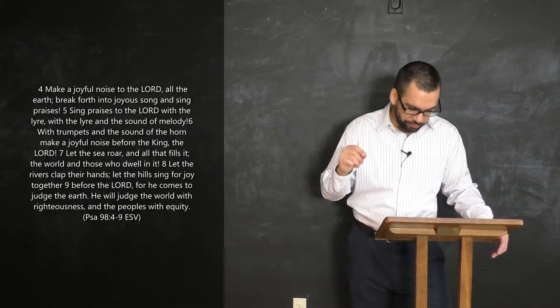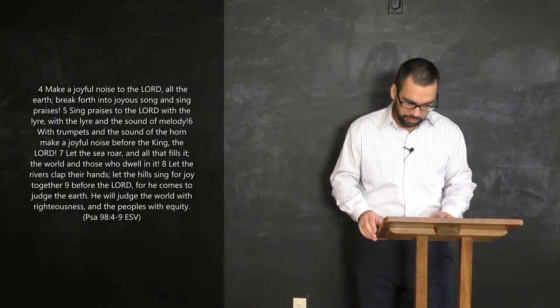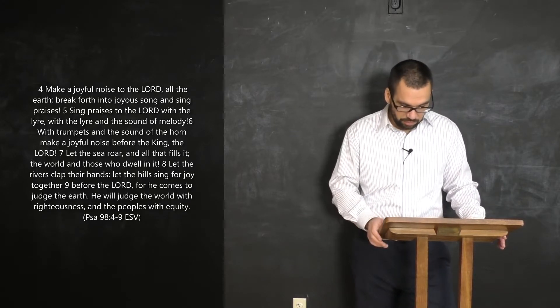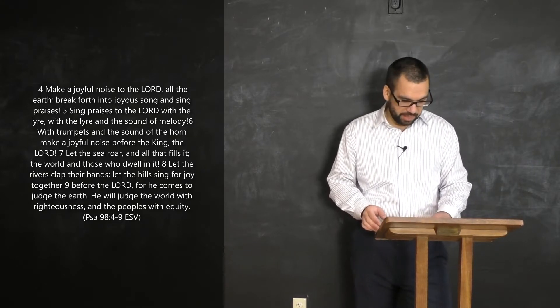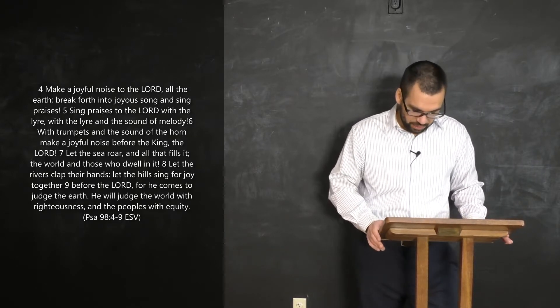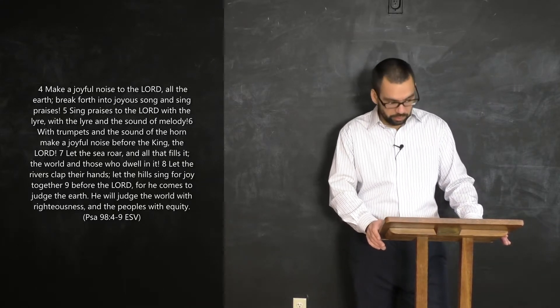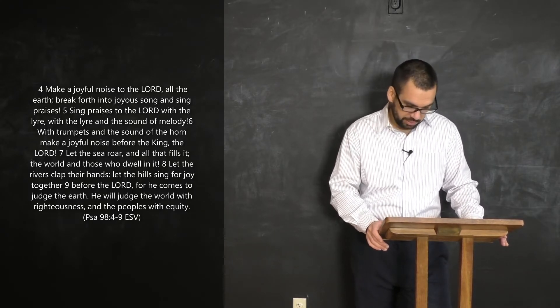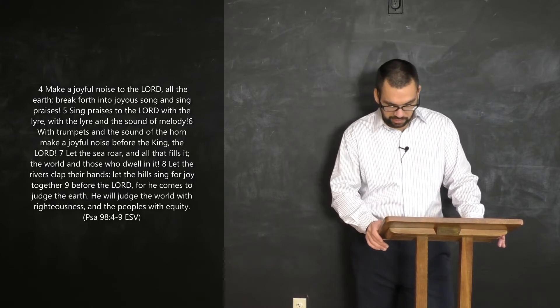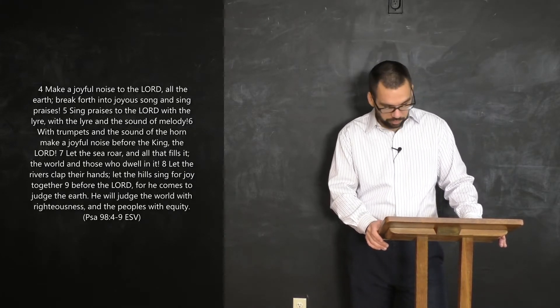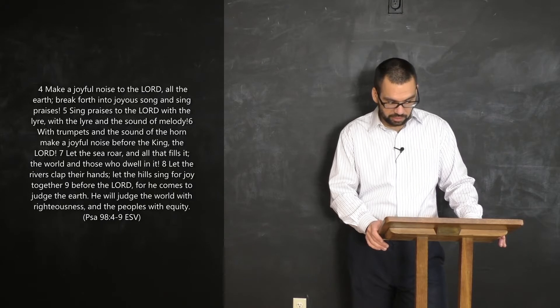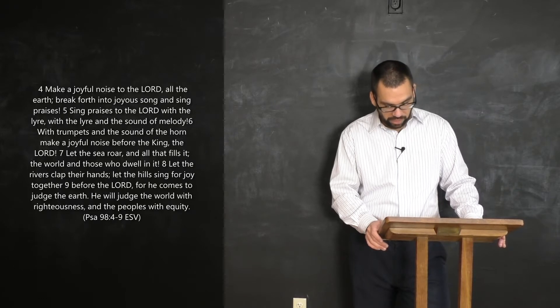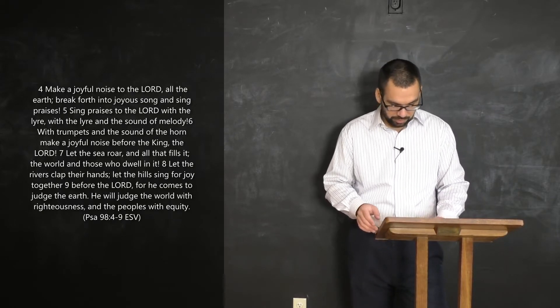It's really all over the place. You've heard this one. Make a joyful noise to the Lord, all the earth. Break forth into joyous song, and sing praises. Sing praises to the Lord with lyre, with the lyre the sound of melody. With trumpets and the sound of a horn, make a joyful noise before the King, the Lord. Let the sea roar in all that fills it, the world and all those who dwell in it. Let the rivers clap their hands. Let the hills sing for joy together before the Lord. Here it is again. For He comes to judge the earth.